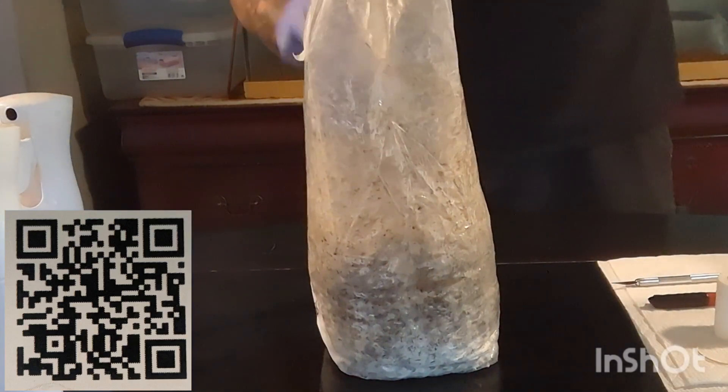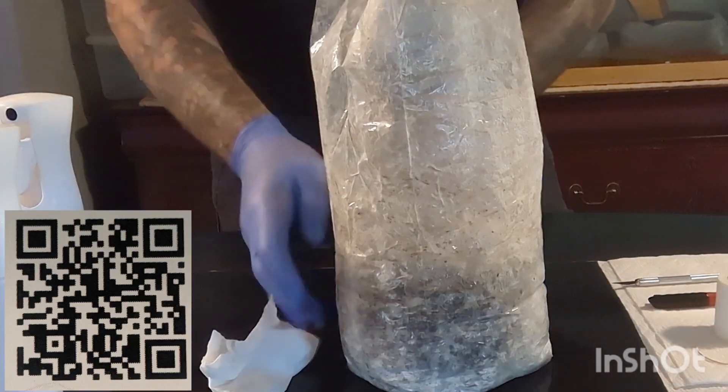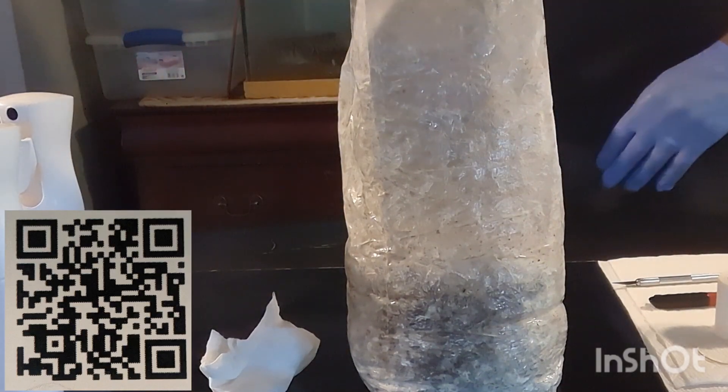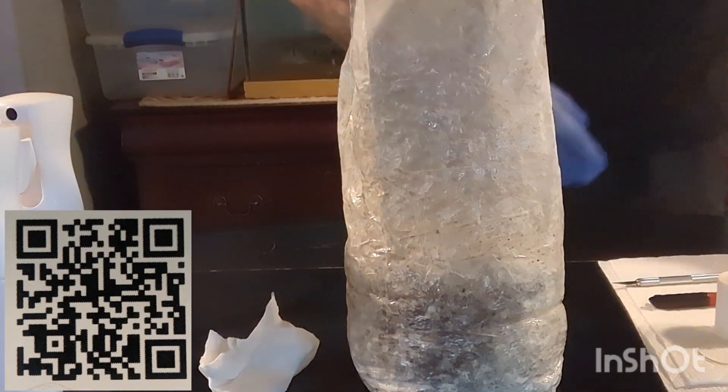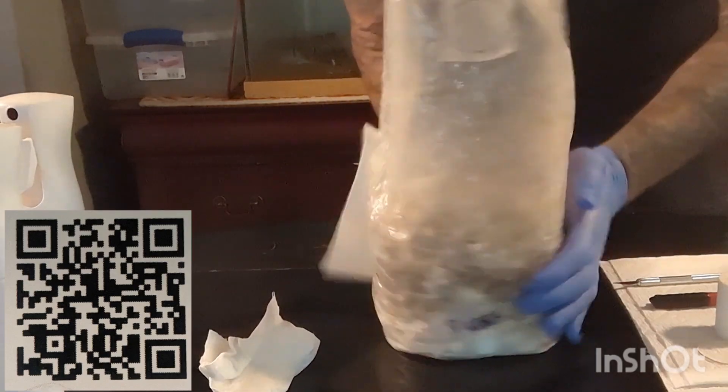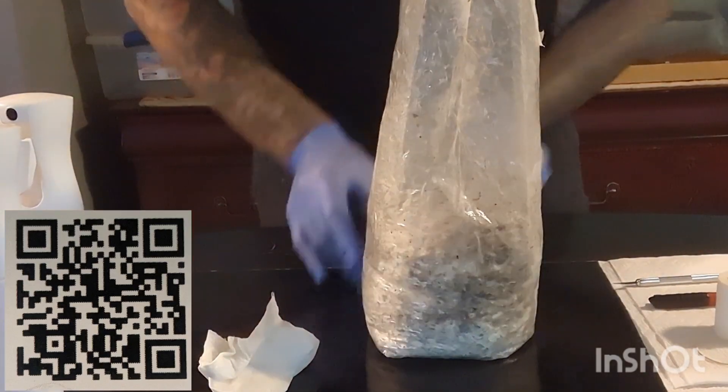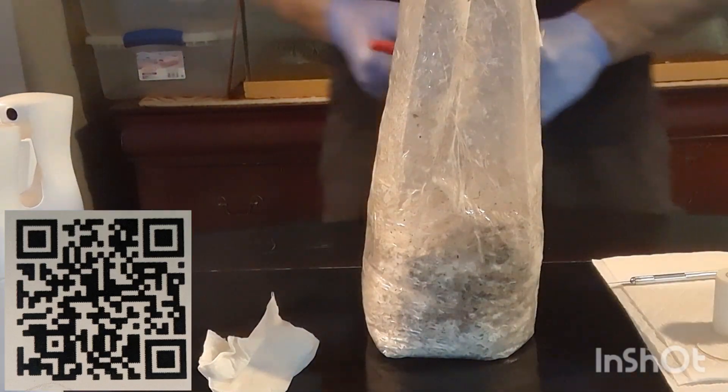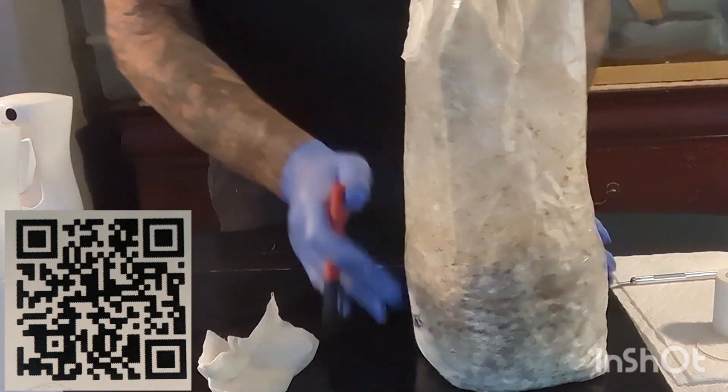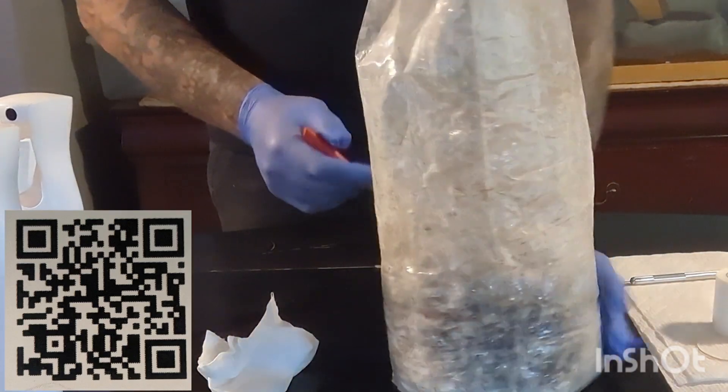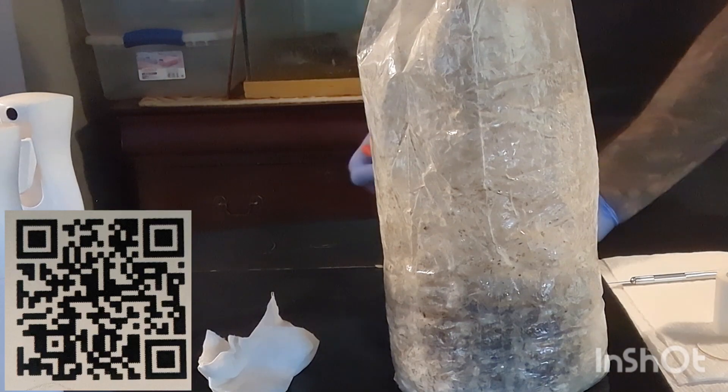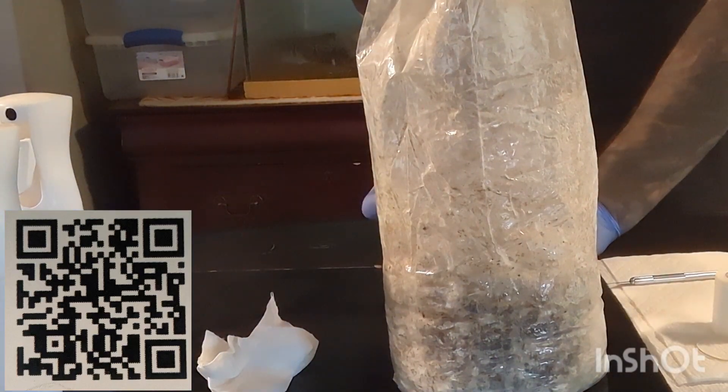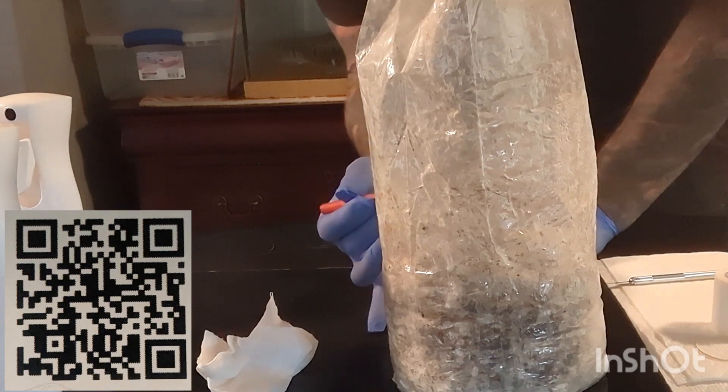So what this is going to entail is we'll just take a pen, make sure we got enough alcohol off the bag, and what we'll do is just make some dots on the bag about every two inches.